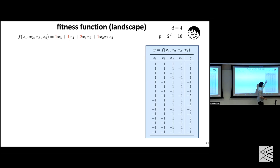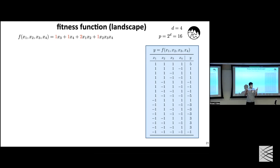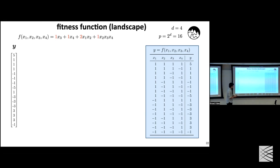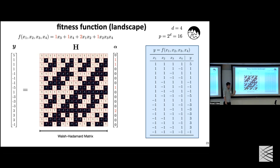In the first row I'm not mutating any location — this is the wild type — and I measure the property, say fluorescence equals 5. Then I mutate location x_4 only, getting another number. I enumerate all 16 combinations of four binary variables. Maybe I use CRISPR or random PCR to generate these variants. I get a vector y showing the properties of all these proteins, the fitness landscape or fitness function.